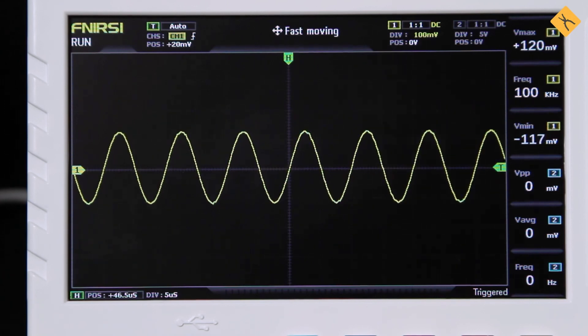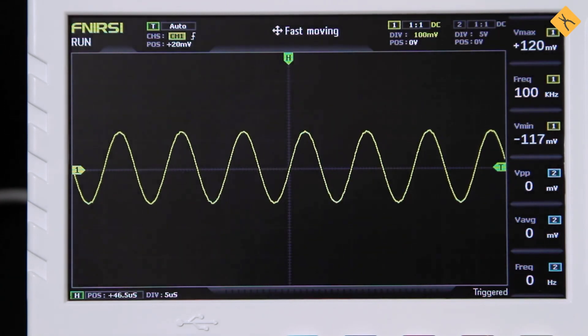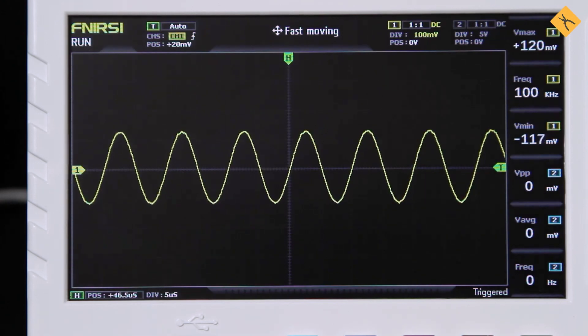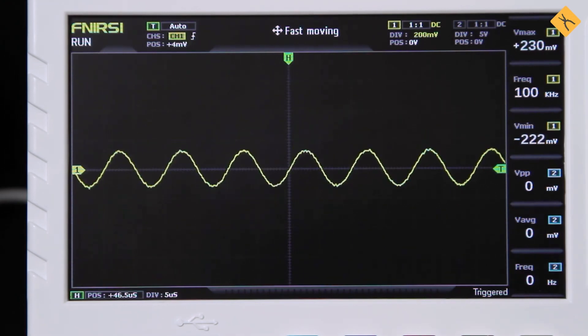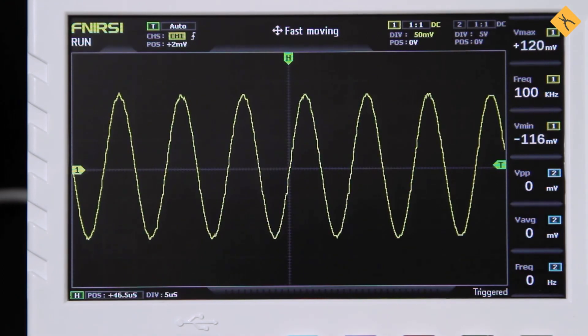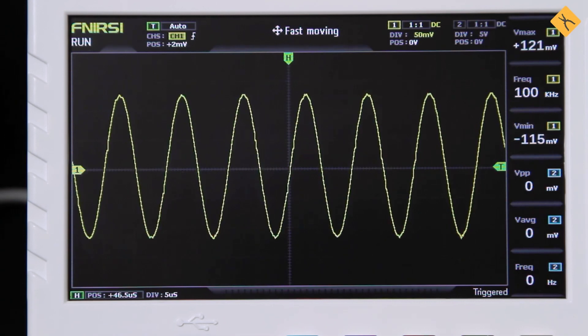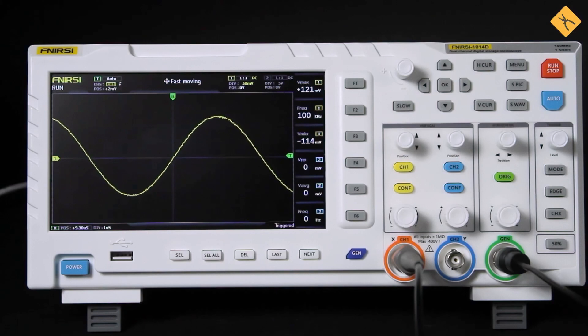The display is matte and thus anti-glare, and the display size ensures optimal comfort of use. By the way, most entry and mid-level oscilloscopes are equipped with 7-inch displays, while higher-end models come with 8 or 10-inch displays. All the controls are located on the front panel.